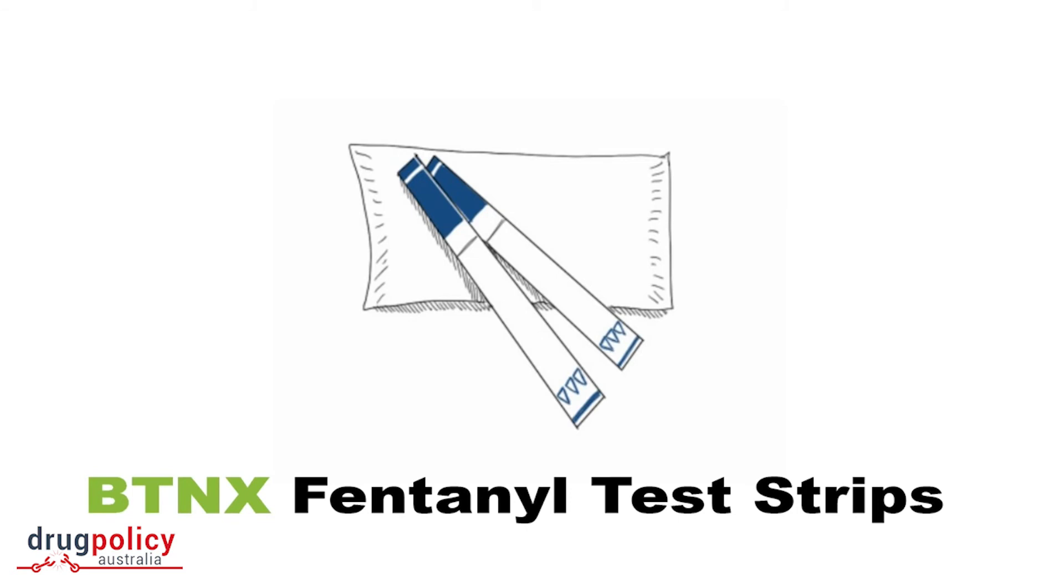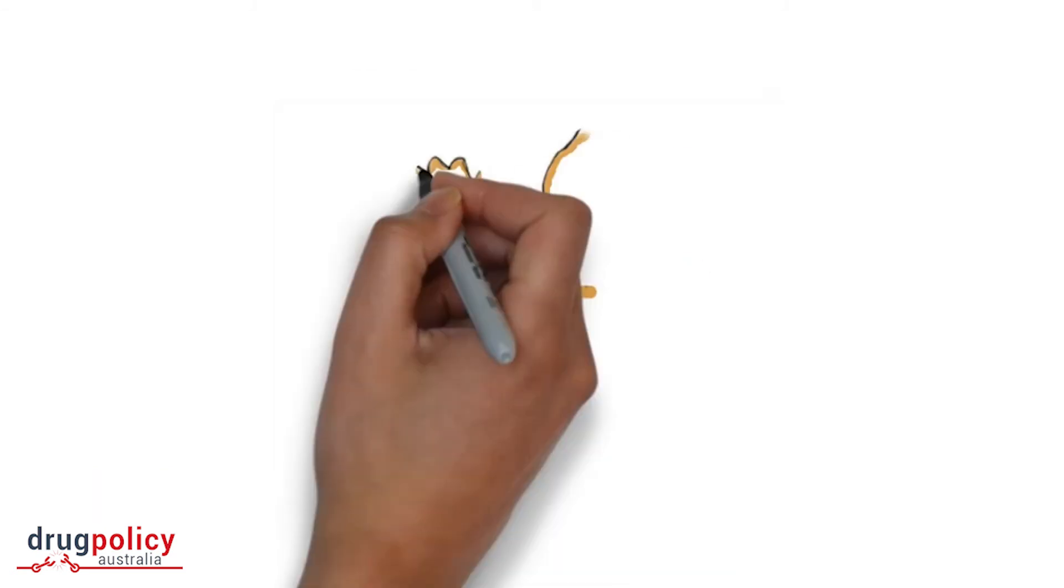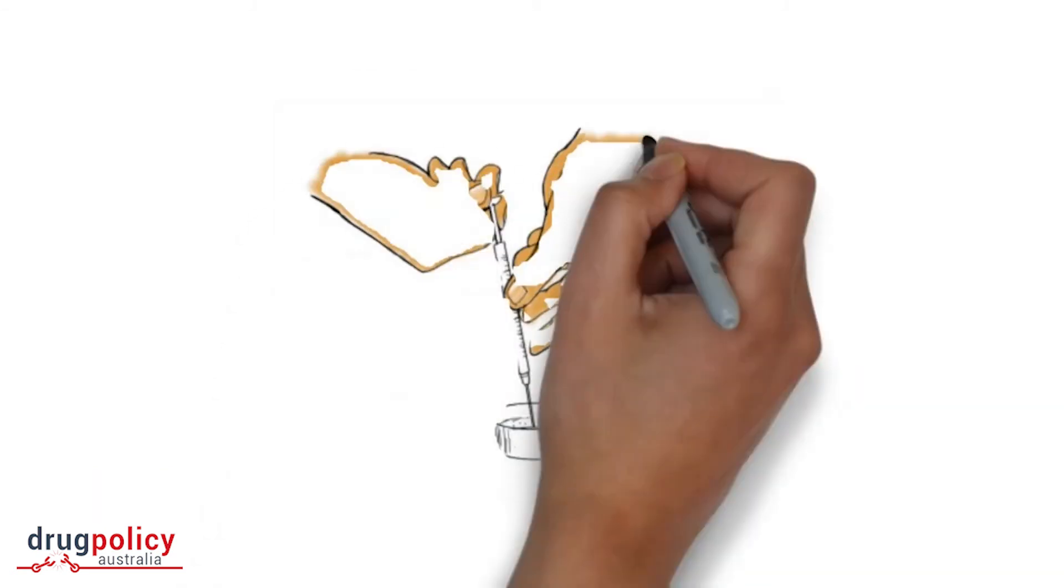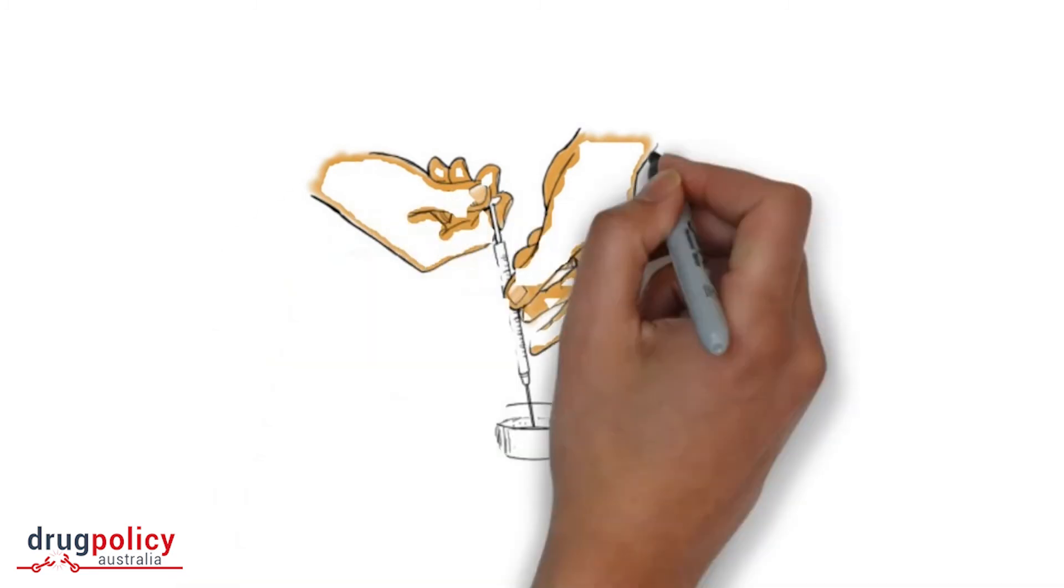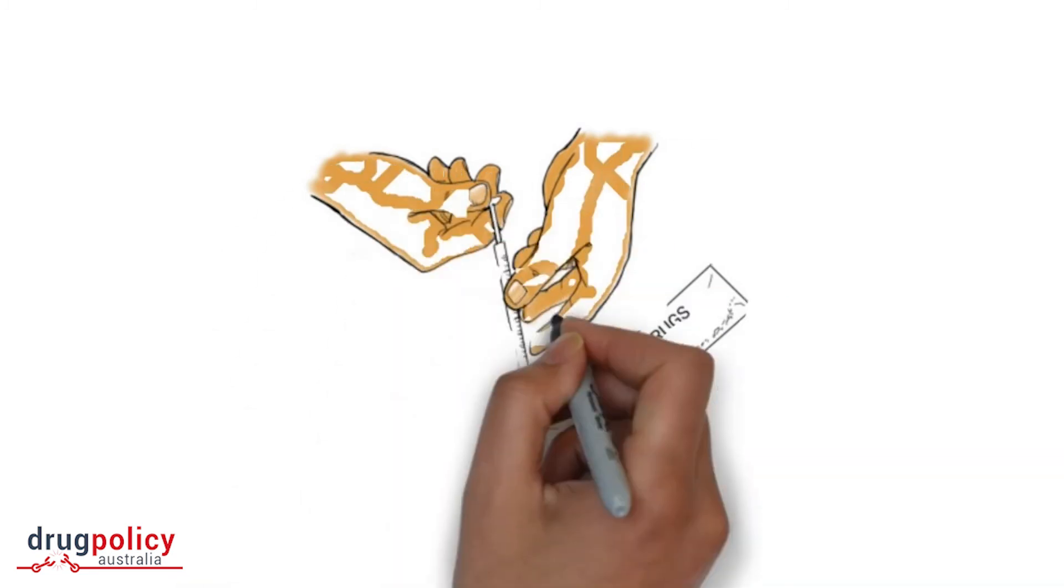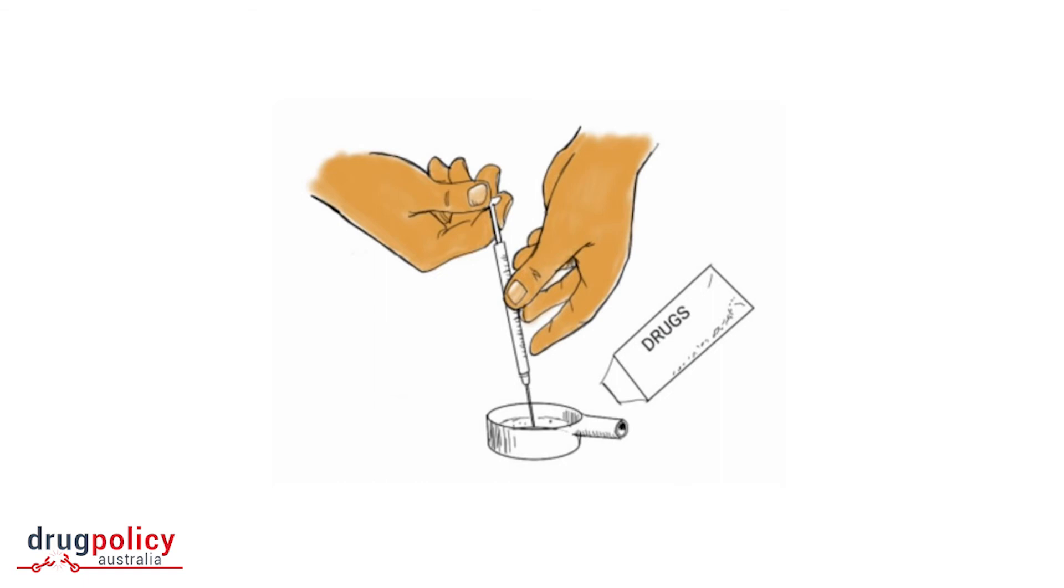Let's say you have some drugs you are going to inject. Prepare your shot as usual, making sure to use a sterile never used before cooker as well as a sterile syringe. Draw your shot into the new syringe and set it aside.